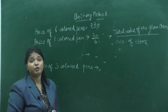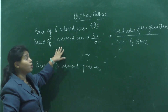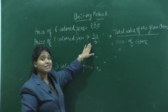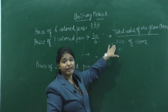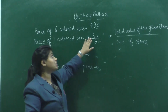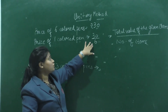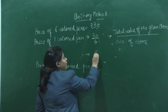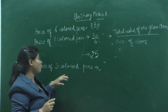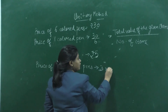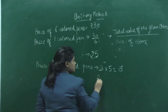The price of six colored pens is rupees 30. First, find the price of one pen: 30 divided by 6 equals rupees 5. The formula is: total value ÷ number of items. Now, the price for three colored pens is 3 × 5 = rupees 15.